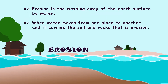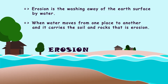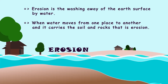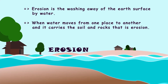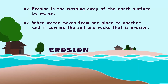Erosion. Erosion is the washing away of the earth's surface — that is, the soil on the land — by water. When water moves from one place to another and carries the soil and rocks, that is erosion.